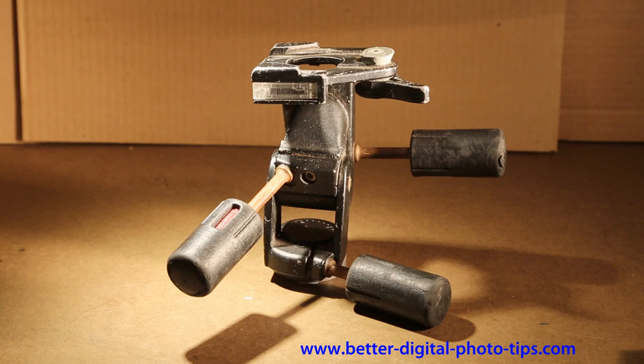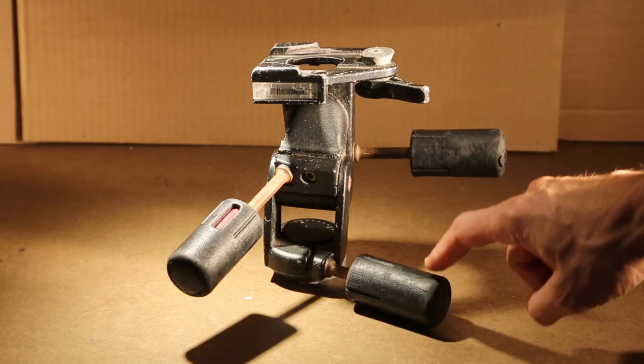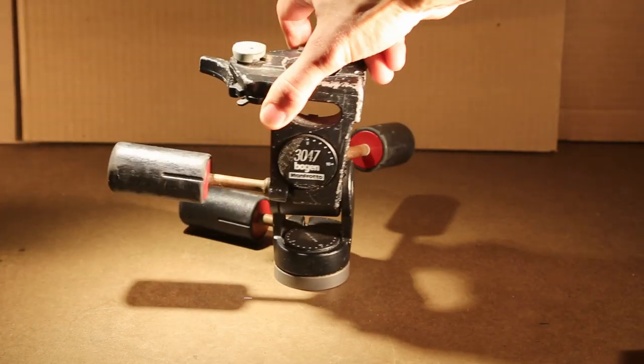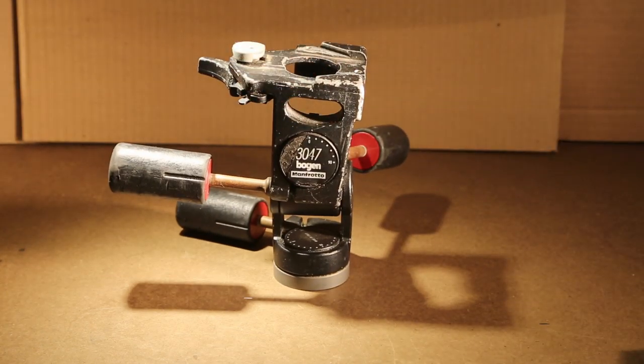This is the standard pan and tilt. It's got three screwdriver handles. This happens to be a Bogen 3047 rated at 16.5 pounds. It's a monster, extremely steady. I've been using it for over 30 years.